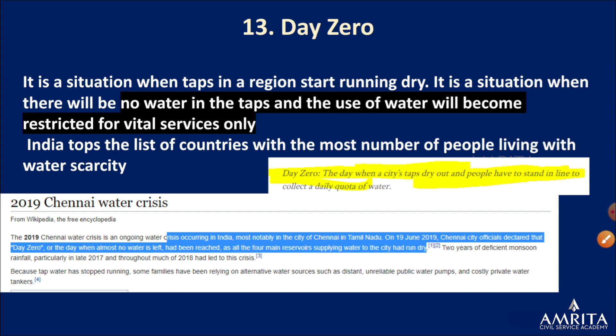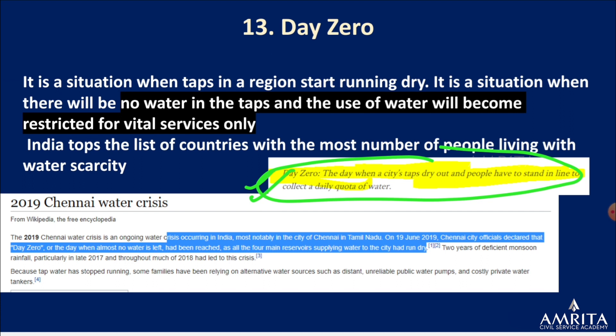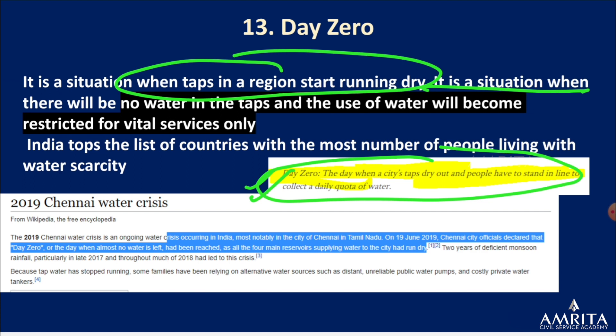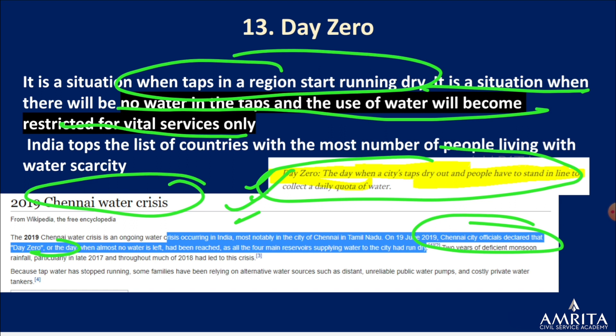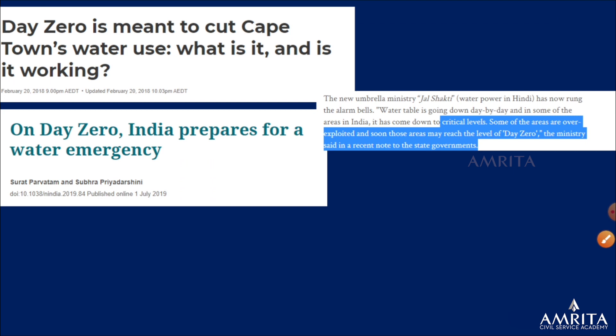Day Zero is defined as the day when a city's taps dry out and people have to stand in line to collect their daily quota of water — water rationing begins. The taps start running dry and water use becomes restricted to vital services only. It happened in the Chennai water crisis when authorities declared Day Zero had arrived. India faces an 'aquacalypse' — this theme has been running throughout current affairs discussions, including the Composite Water Management Index.